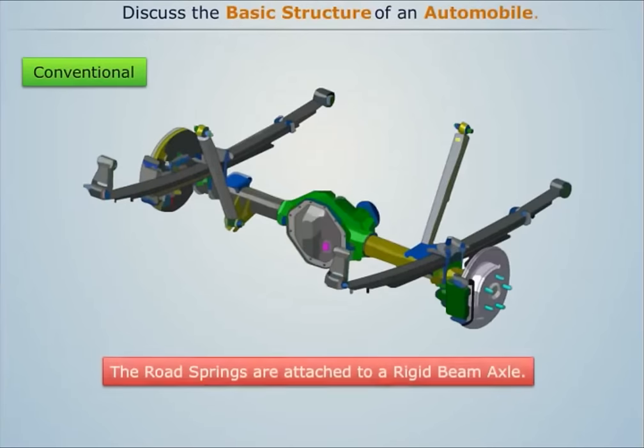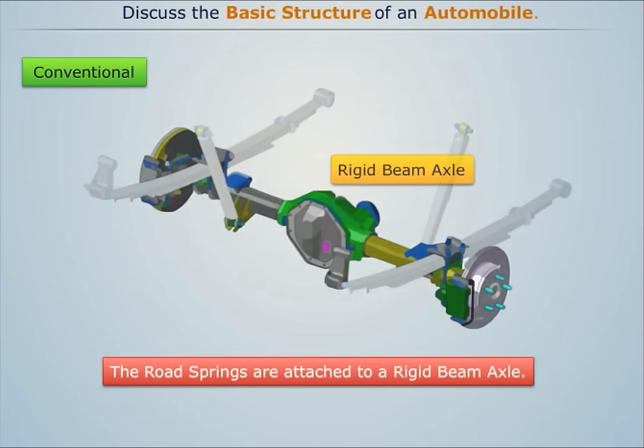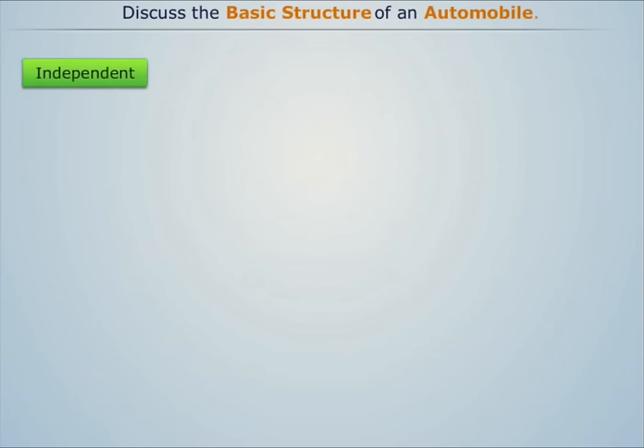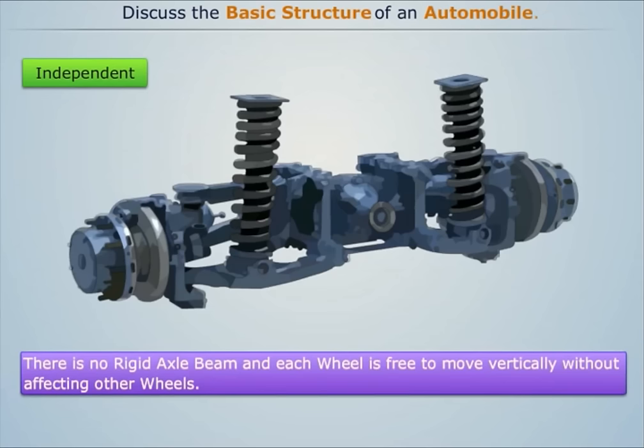In the conventional system, road springs are attached to a rigid beam axle. In the independent system, there is no rigid axle beam and each wheel is free to move vertically without affecting other wheels.